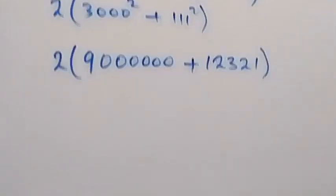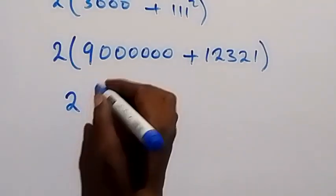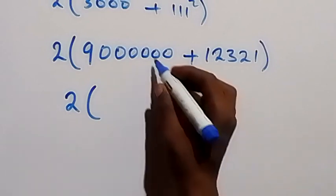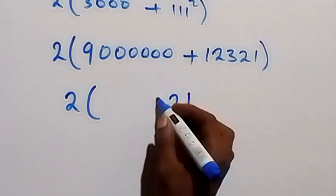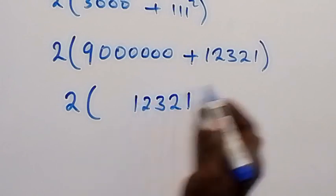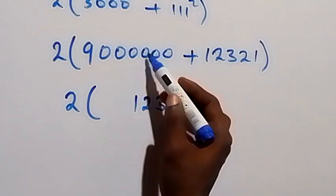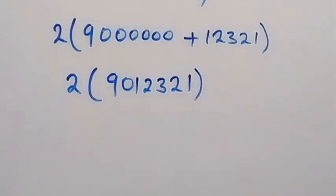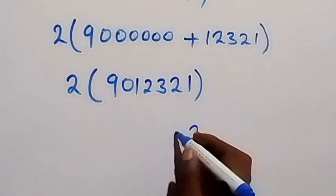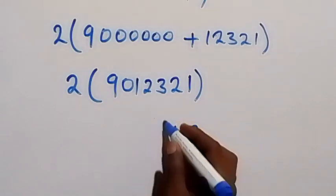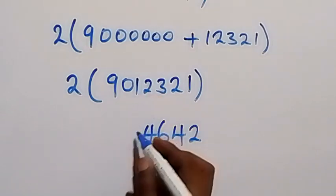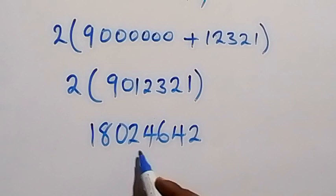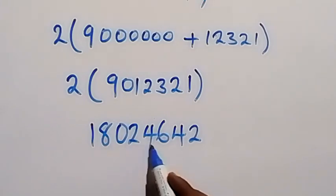Then the addition gives us 9,000,000 plus 12,321, which is 9,012,321. Now we multiply by 2: 2 times 9,012,321. Multiplying from the back: 2 times 1 is 2, 2 times 2 is 4, 2 times 3 is 6, 2 times 2 is 4, 2 times 1 is 2, 2 times 0 is 0, 2 times 9 is 18. That gives us 18,024,642.